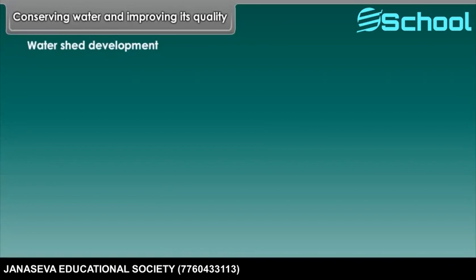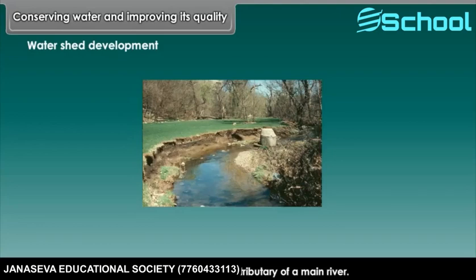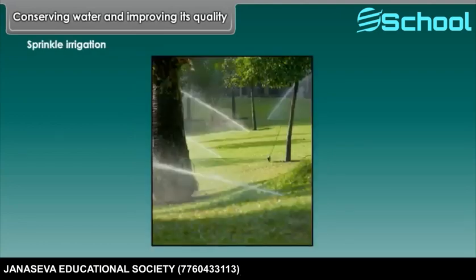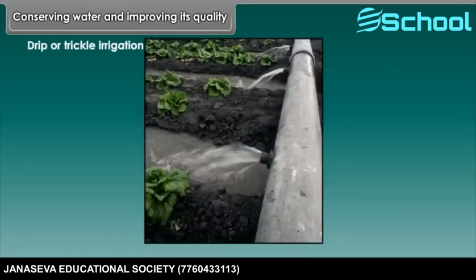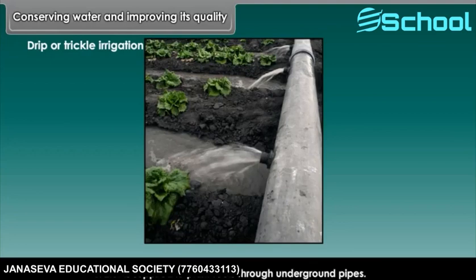Watershed development. A watershed is the basin of a tributary of a main river. Sprinkle irrigation is the most effective and efficient tool of irrigation. Drip or trickle irrigation is another type of irrigation used to conserve water, where water is supplied to plant roots through underground pipes.